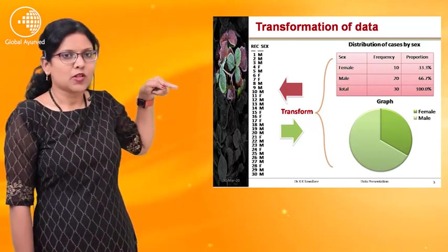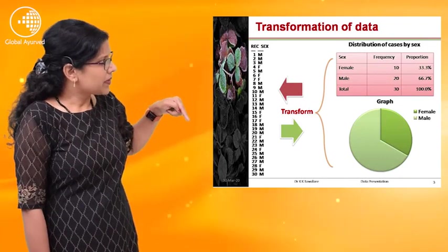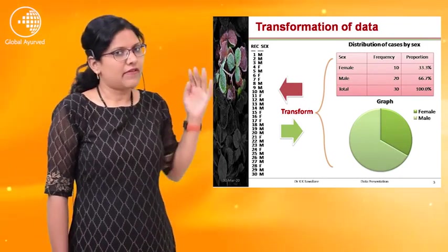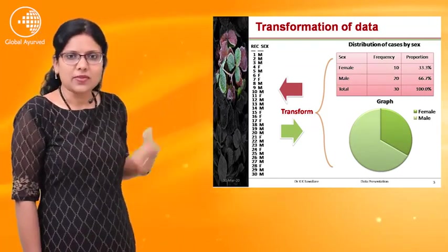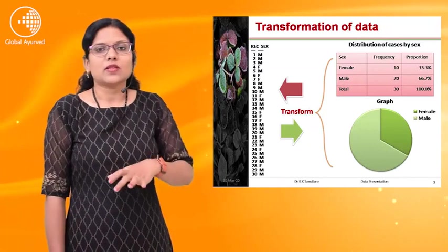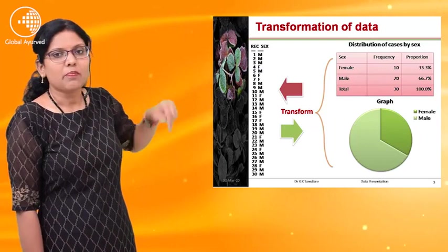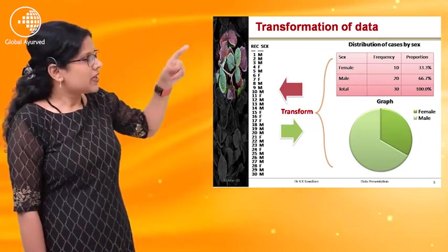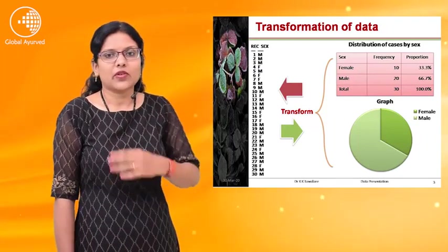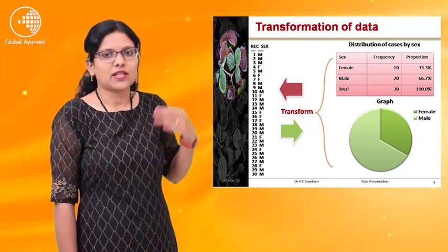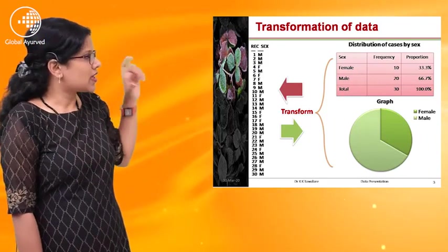Here we can see raw data — 1 to 30 patients, male or female. But it is very difficult to understand, so we need to transfer the data into a specific form. We can transfer it into a table or a pie chart. A table is very easily accessible. For example: sex — 20 females, 10 males, total 30. So for easy understanding, we need to transfer the data.